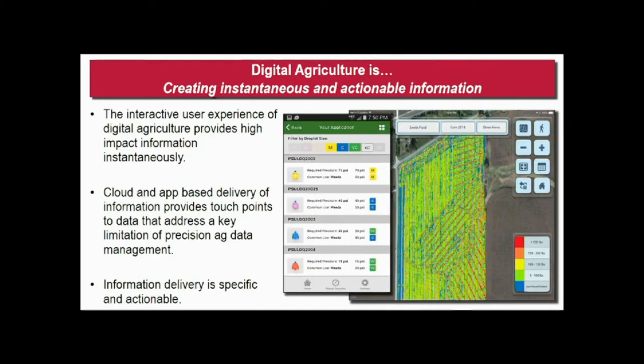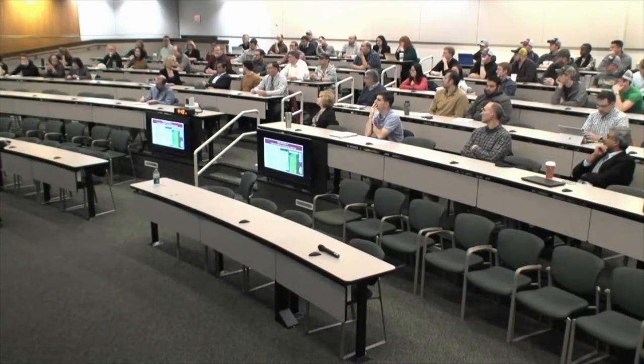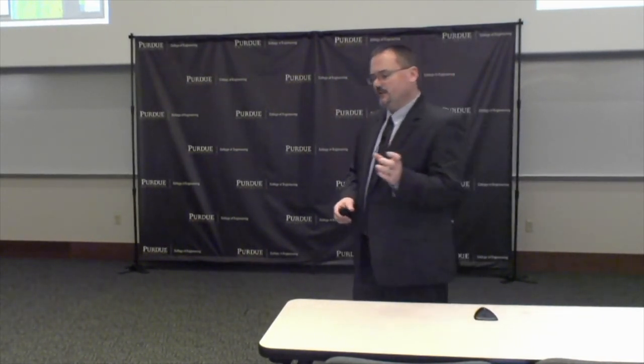Digital ag is creating instantaneous and actionable information. In my opinion, this is really driven by the user experience and the use of mobile technologies to get information into people's hands. Much of the data we use in digital ag is not necessarily new. A precision ag textbook was written back in 2000 — a lot of these things have been out there. But the ability to move information, get it into decision makers' hands, apply analytics to give some directional indication — that's new. When you look at surveys of growers asking where they get their information, mobile technologies is number one on the list.